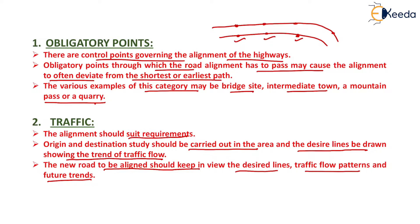While deciding a particular alignment of road, we need to keep certain parameters in mind, such as traffic flow along that alignment as well as the future trend — whether the traffic is going to increase in the future or not. So we need to analyze these factors before deciding any particular alignment.